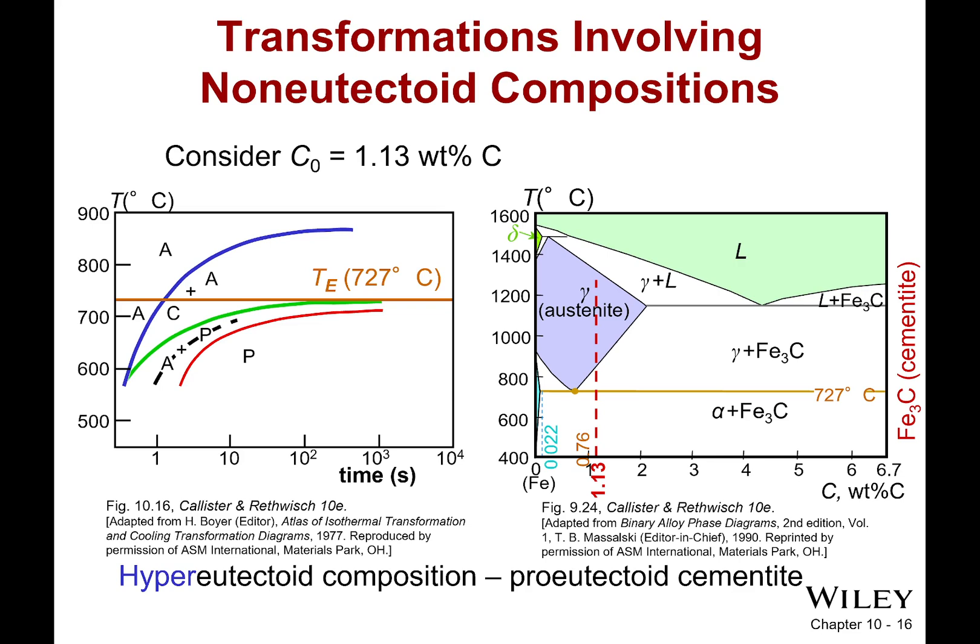Okay, so last time we were looking at that TTT diagram. We saw that we had the perfect eutectoid composition, 0.76% carbon, which gave us that perfect point right here on our diagram, and everything was great and hunky-dory.